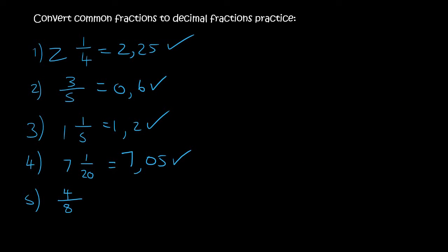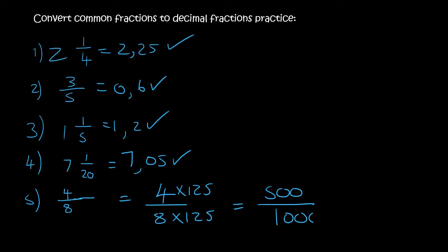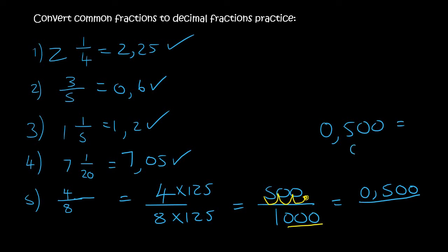For those of you who did not simplify, absolutely fine. Hopefully you remembered that 8 multiplied by 125 gives you 1000. So if you multiply at the top you end up with 500, and at the bottom you end up with 1000. There are three zeros, so we move from the back: 1, 2, 3, and we end up with 0.500. Because it's empty in the front you just add a zero, and 0.500 is the same as 0.5. So we got the same answer for both.